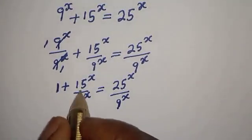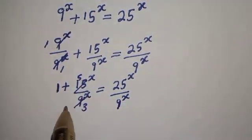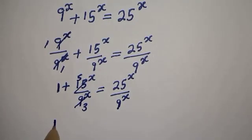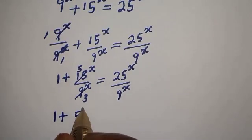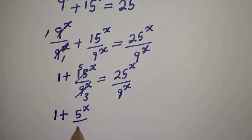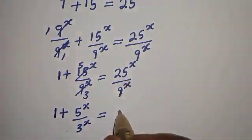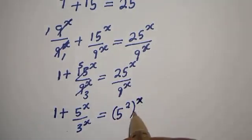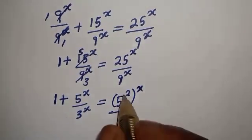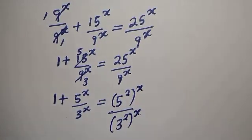Then, 3 goes into 9 and 5 into 15, so this can be written as 1 plus 5 raised to the power s over 3 raised to the power s, is equal to 5 squared raised to the power s over 9, which is 3 squared, raised to the power s.